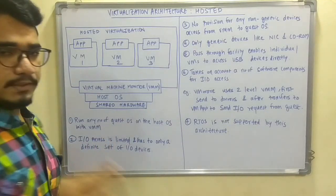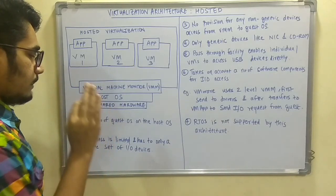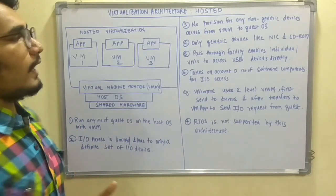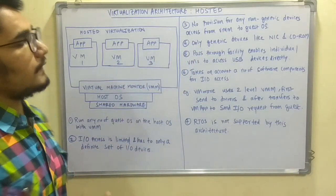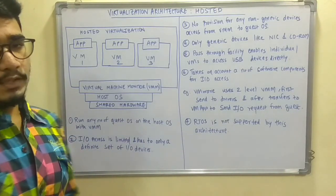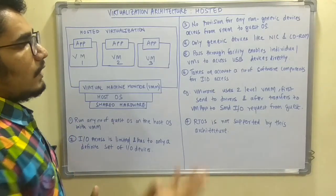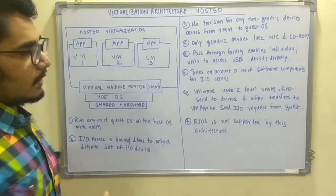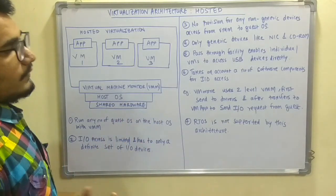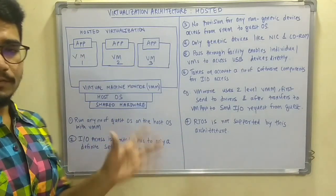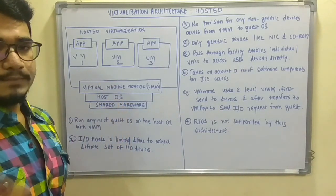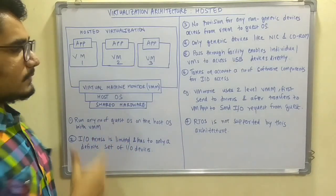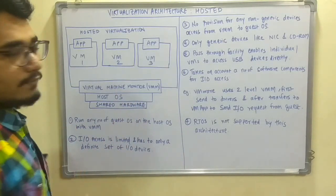The main disadvantage of this hosted architecture is that you have only limited access to IO devices — only up to certain generic devices like CD-ROM, floppy disk, or the NIC, the network interface card. There is no separate provision for non-generic devices; you cannot access an external hard disk or USB devices. If you want to access such devices, you need a pass-through facility or pass-through mechanism, which enables individual virtual machines to access USB devices directly. Because of all these IO device problems, it needs a large number of software companies to support those IO access.